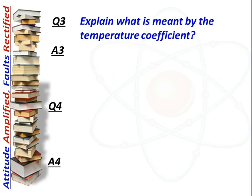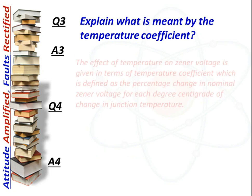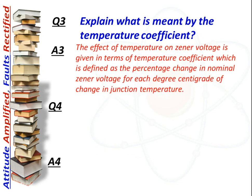Next question: What is meant by the temperature coefficient? Answer: The effect of temperature on zener voltage is given in terms of temperature coefficient, which is defined as the percentage change in nominal zener voltage for each degree centigrade of change in junction temperature.